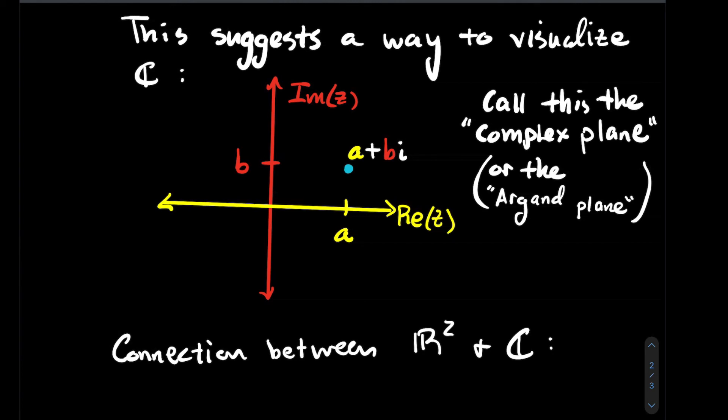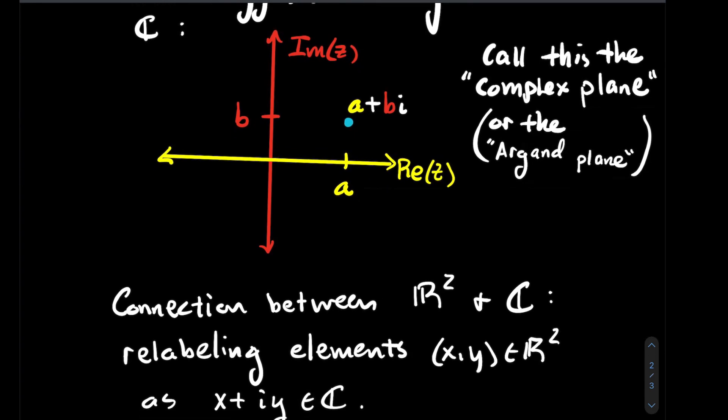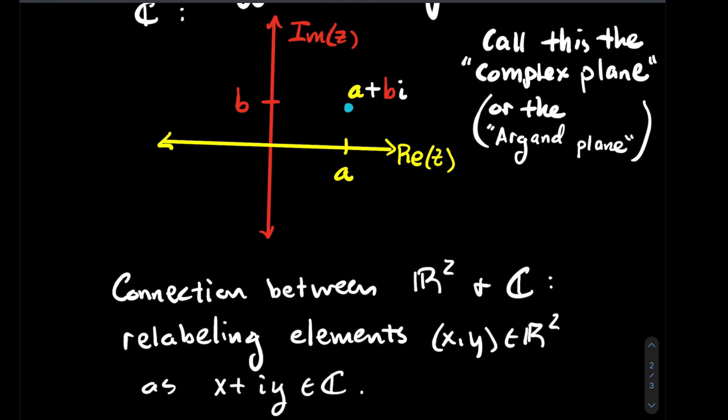What's the connection between the plane R2 that I know and love from college algebra to the complex plane? The connection is I just relabeled the elements. Instead of thinking about a point x comma y in R2, I'm going to think about it as the complex number x plus iy in C.